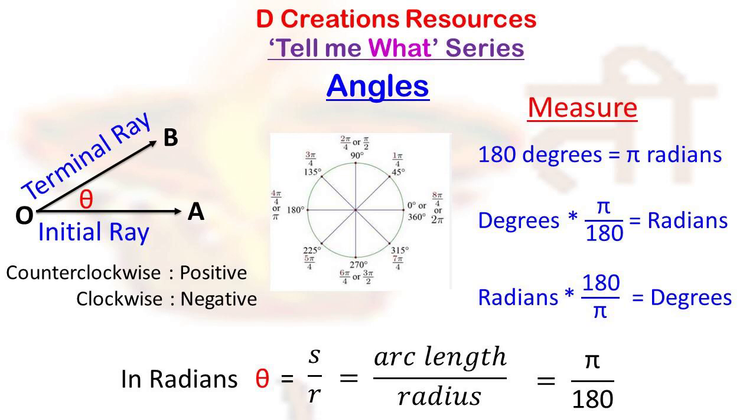So for example, if I want to convert 180 degrees itself, then what is it going to be? π upon 180 into 180, that means π radians. So 180 degrees is π radians. Similarly, if the angle is 90 degrees, then 90 into π divided by 180, so π upon 2 radians, or we call it as π by 2 radians.